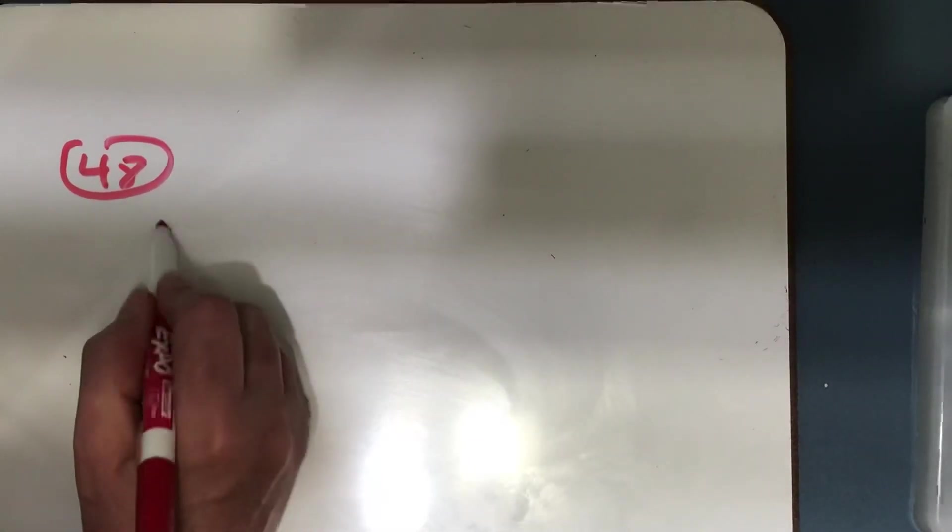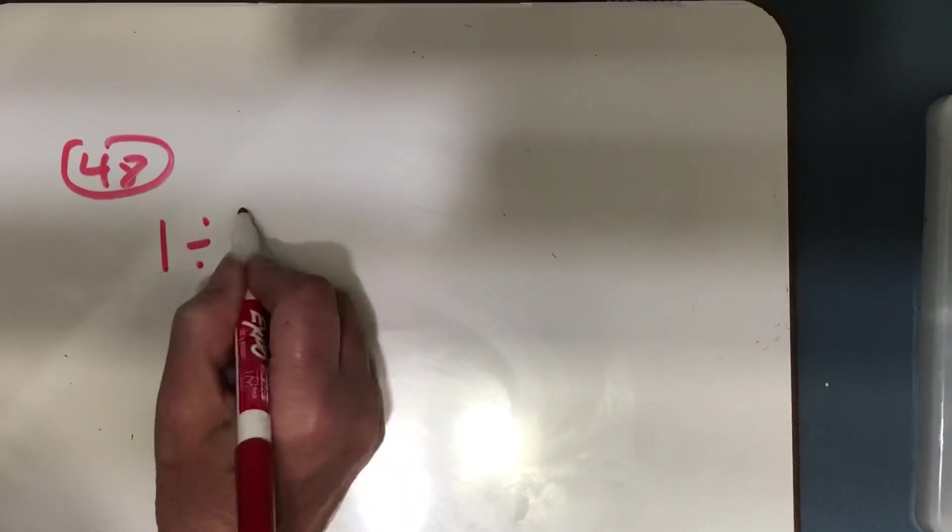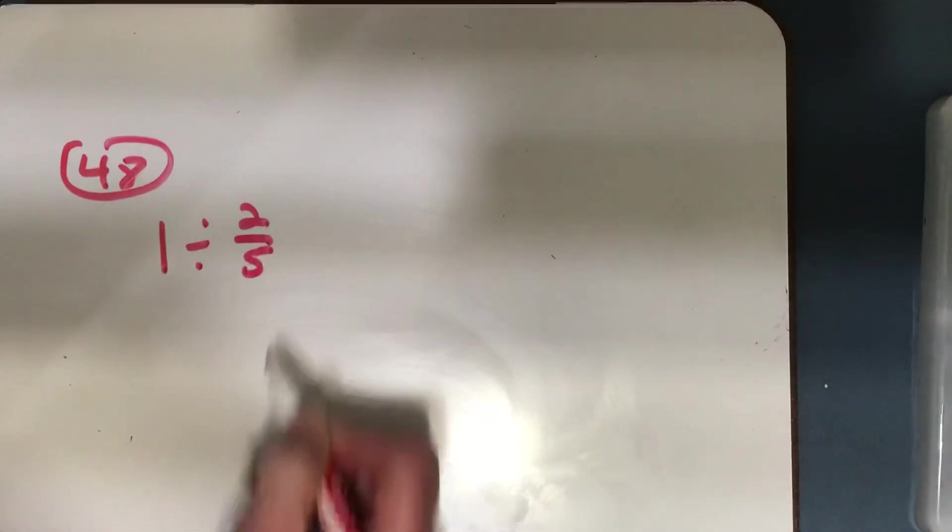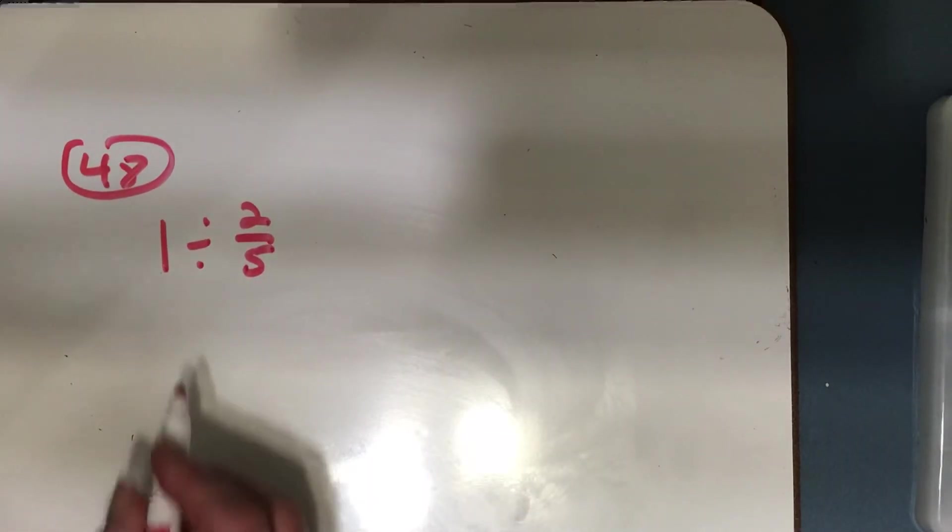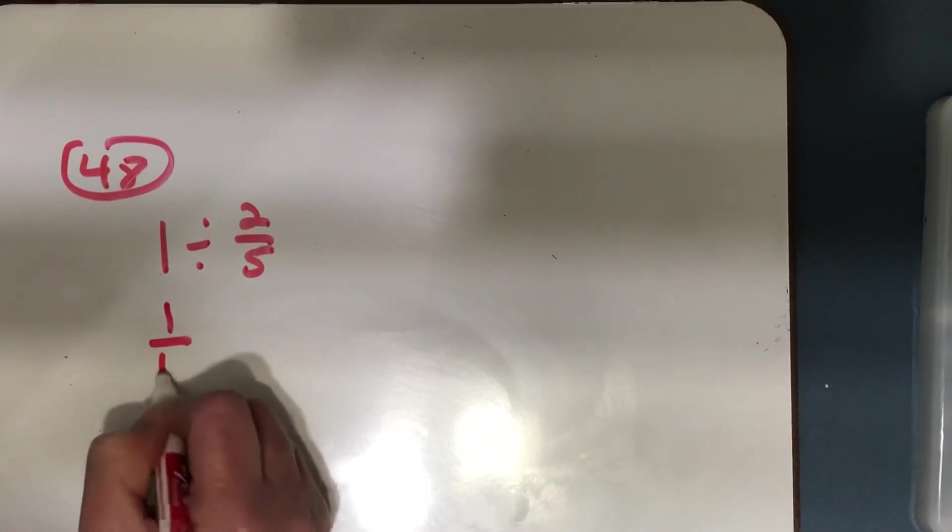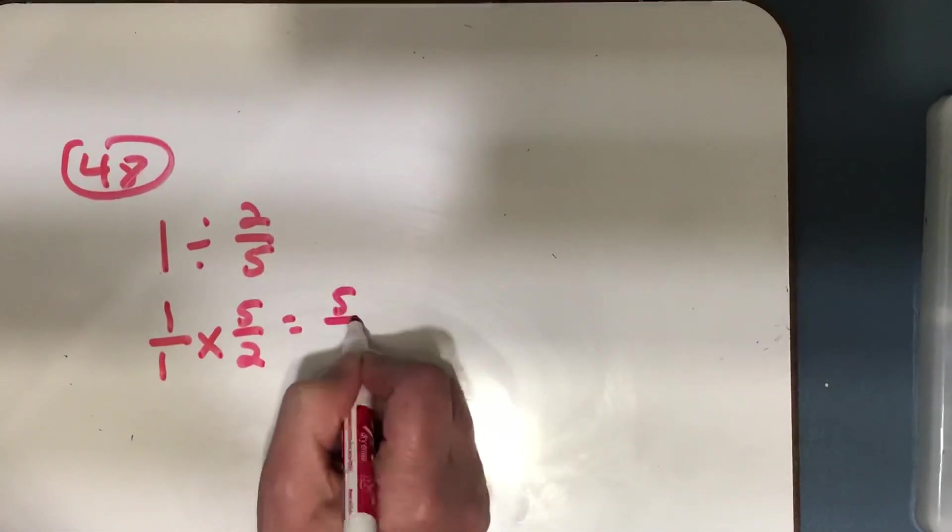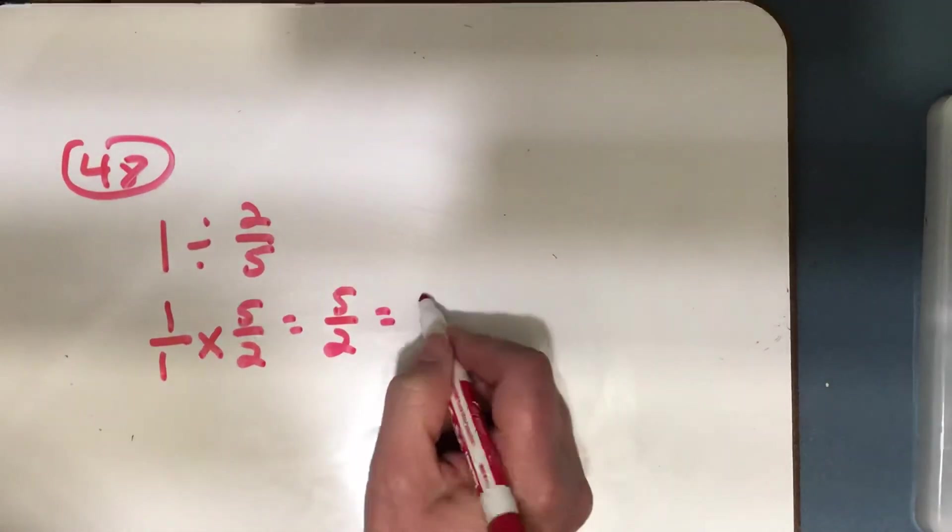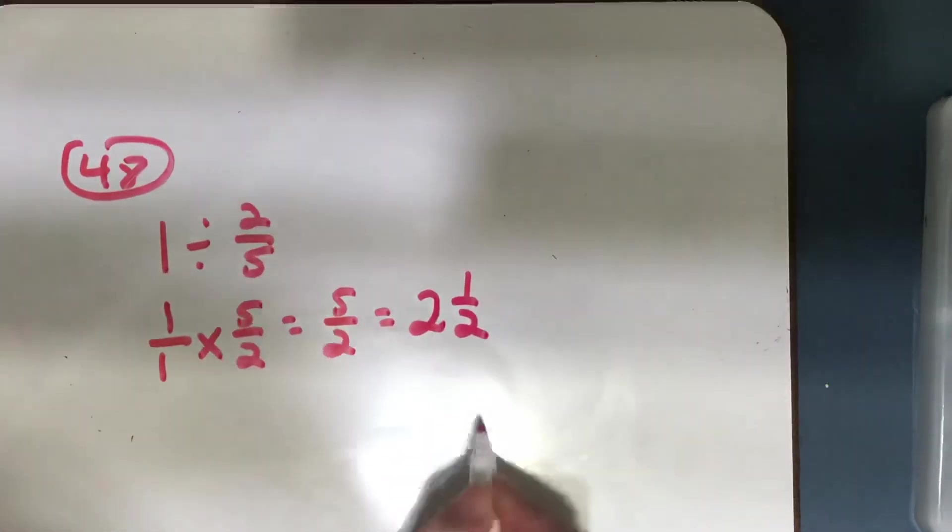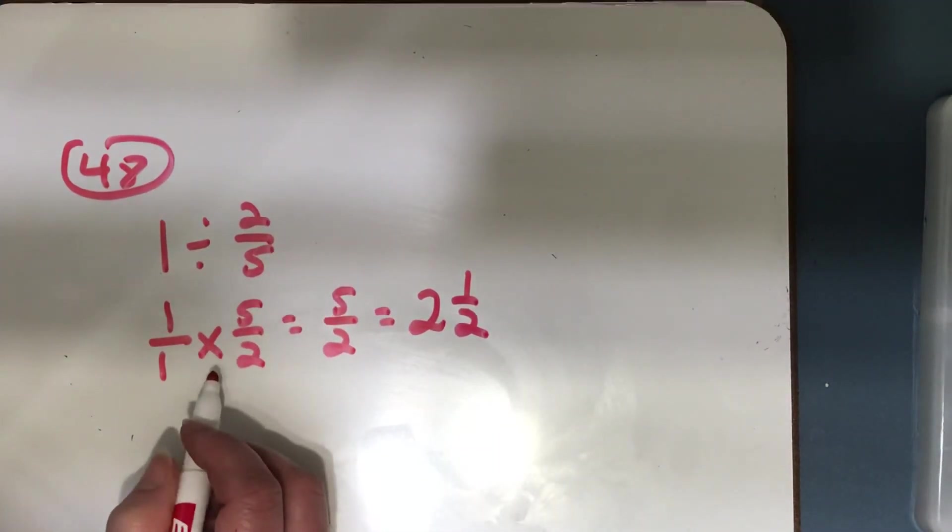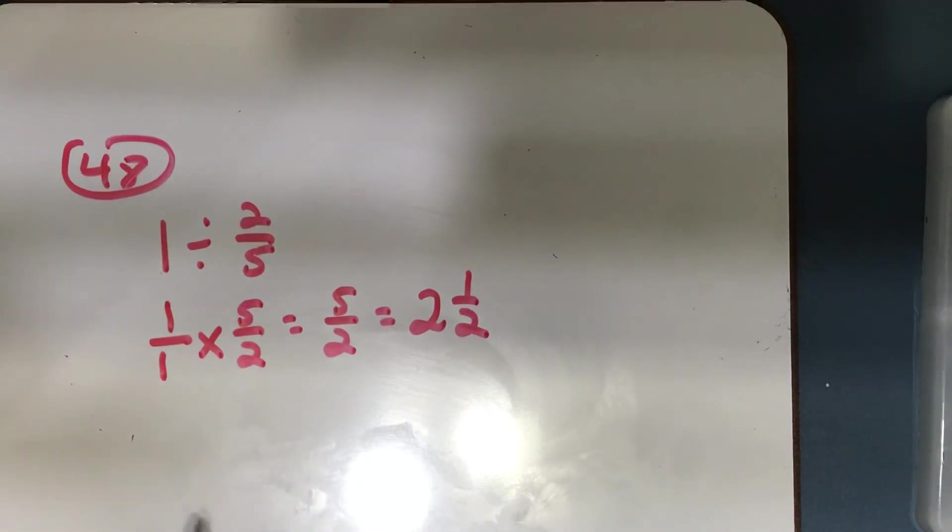So, one whole divided by 2/5 is what we need to do. So, remember that would be 1 over 1 times 5/2, which will equal 5/2, which equals 2 and 1/2. So, Emily must run 2 and 1/2 laps in order to run a mile.